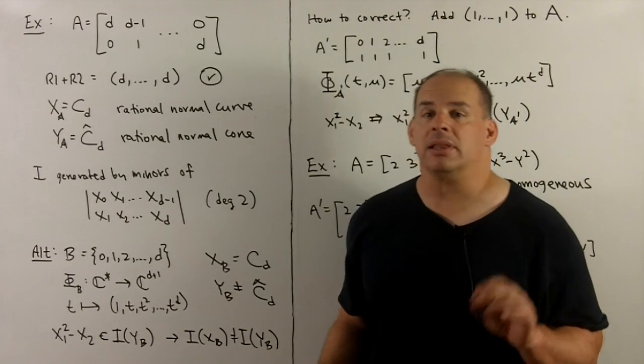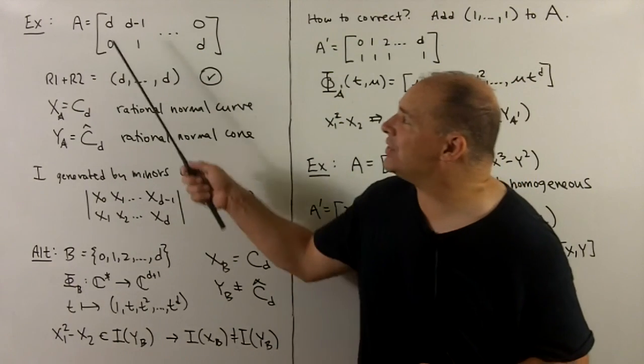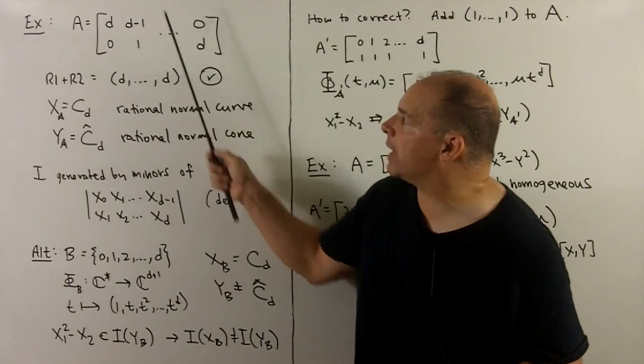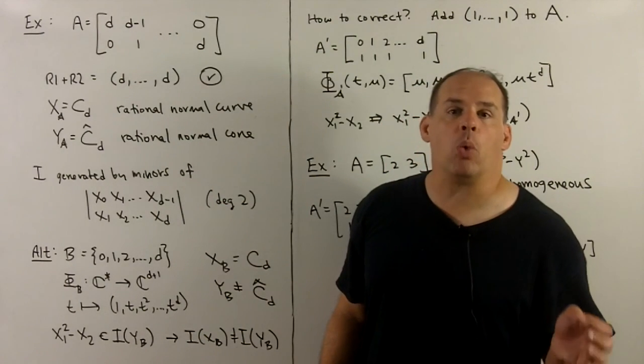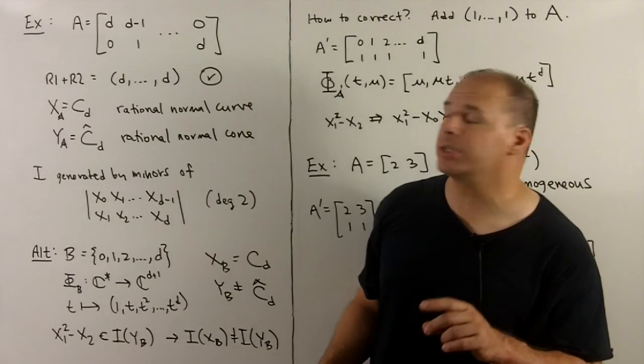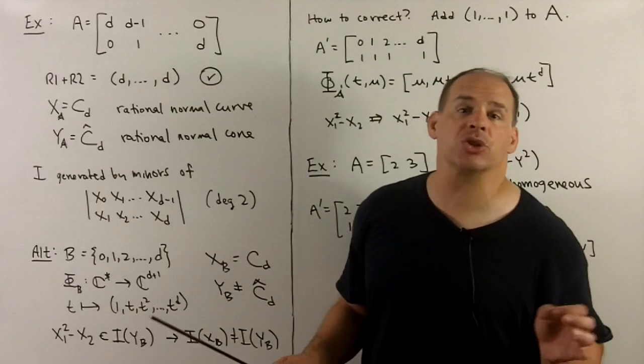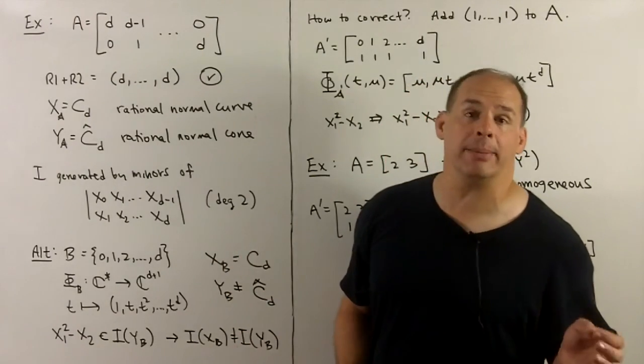For our next example, let's consider the rational normal cone and the rational normal curve. So A is equal to [d,0; d-1,1; ...; 0,d]. If we add row 1 and row 2, we get the tuple full of d's. So the proposition holds, and the terminology is consistent. The rational normal cone is the cone over the rational normal curve of the same degree.